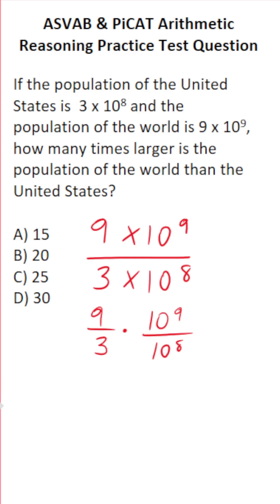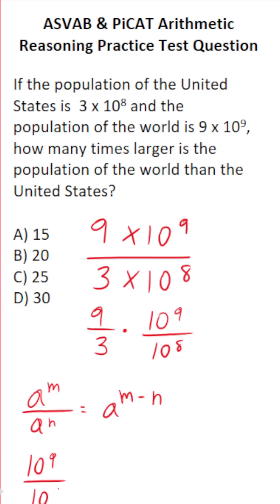Specifically, we're going to use the quotient rule, which says if you have a to the m over a to the n, that equals a to the m minus n. So if we have 10 to the 9th over 10 to the 8th, that equals 10 to the 9 minus 8. 9 minus 8 is 1, so this is 10 to the 1st, which is just 10.